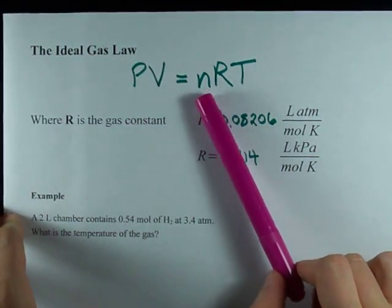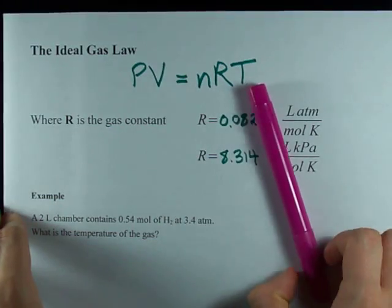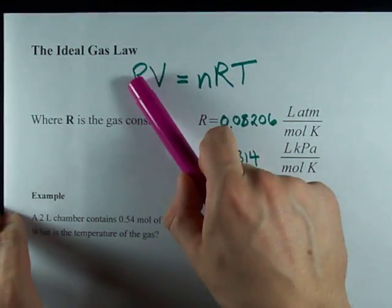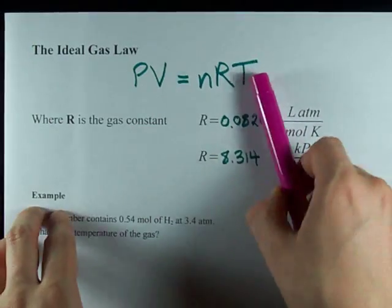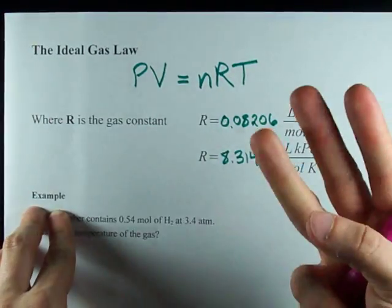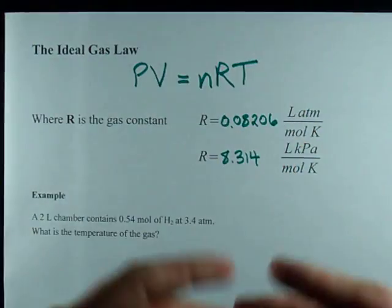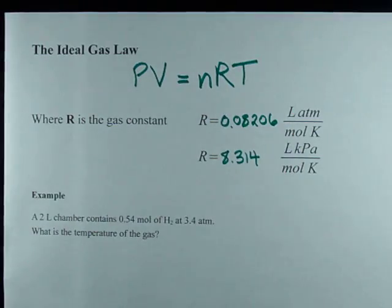That's PV equals nRT. This helps us figure out either the pressure or volume or number of moles or temperature of a gas if you're given the other three variables. Often in the lab, you can measure three of those other variables.